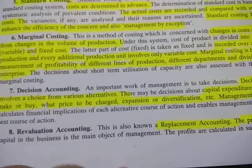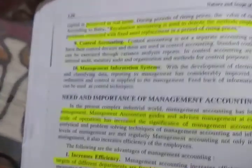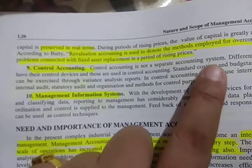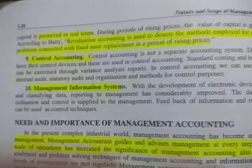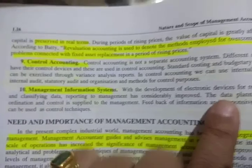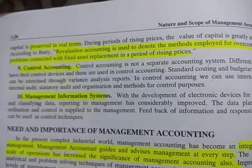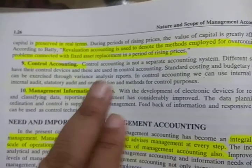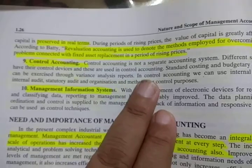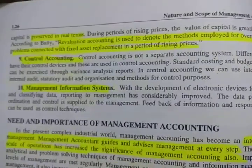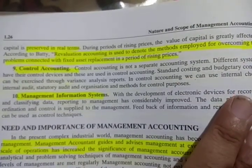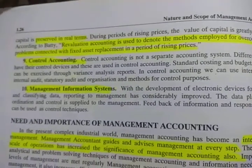The next point is control accounting. Control accounting is not a separate accounting system — it is part of the overall accounting system. Control devices such as standard costing and budgetary control are used within the control accounting system to compare performance.